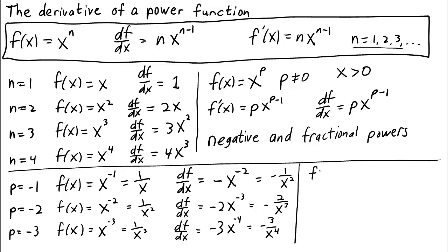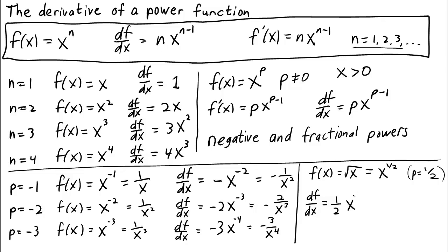What about the square root? f(x) = √x, which is just x to the power of 1/2. This formula works just as well for fractional powers, so we use p = 1/2. In this case, df/dx equals 1/2 times x^(1/2 − 1). Since 1/2 − 1 = −1/2, we can rewrite x^(−1/2) as 1/√x. So the derivative of the square root is 1/(2√x).